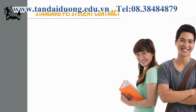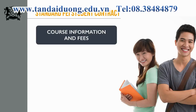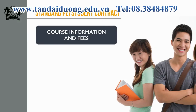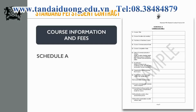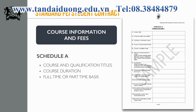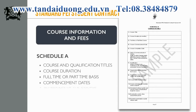Let's start with the first category — course information and fees. You'll find this information on page one, under your personal details in clause number one. You'll find references and information in an attached Schedule A, which provides details on all dates, times, and related information pertaining to the delivery of the course. Please take special note of the course and qualification titles, course duration, and whether you are doing it on a full-time or part-time basis. You'll also find the course commencement and completion dates, as well as the detailed schedule of the course.